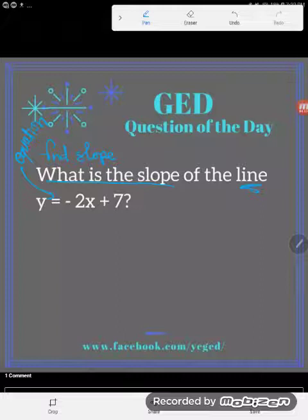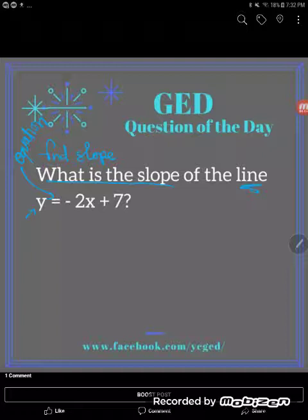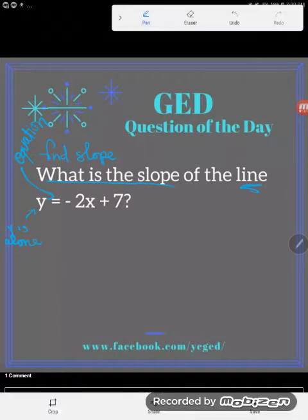Now the really nice thing is, I notice that the y is alone. Do you see how the y is alone? This equation is what we call solved for y. Y is by itself on one side of the equal sign.